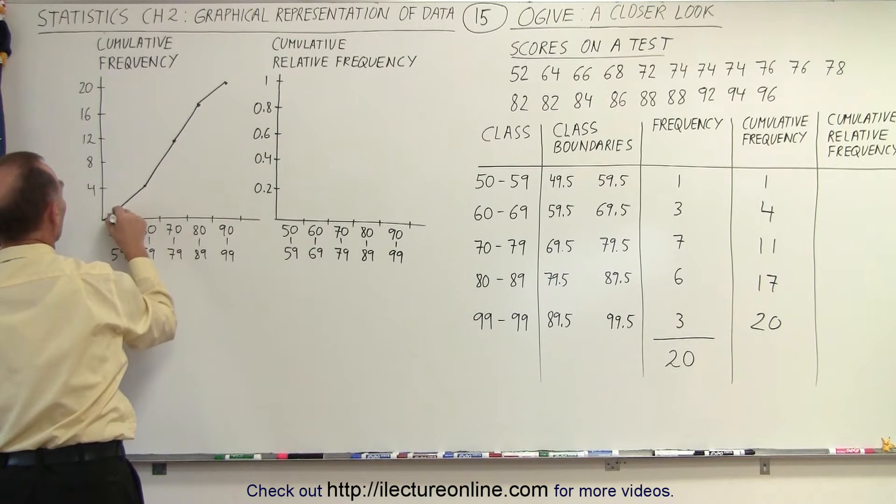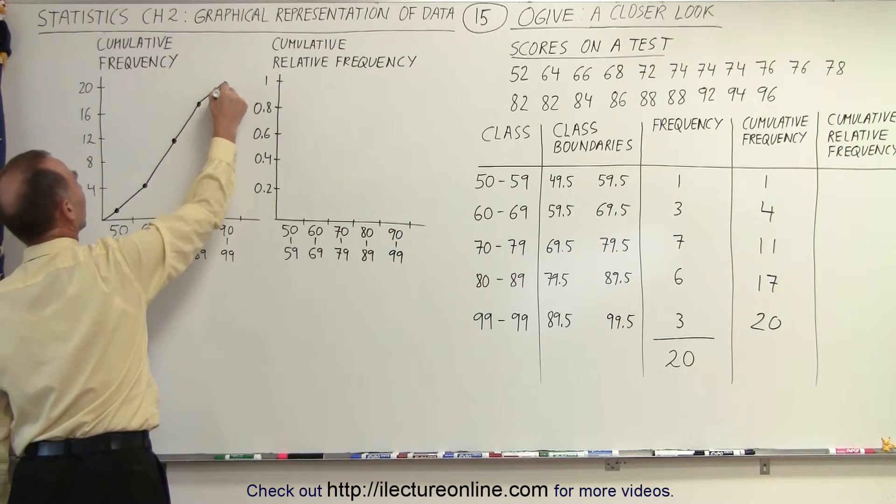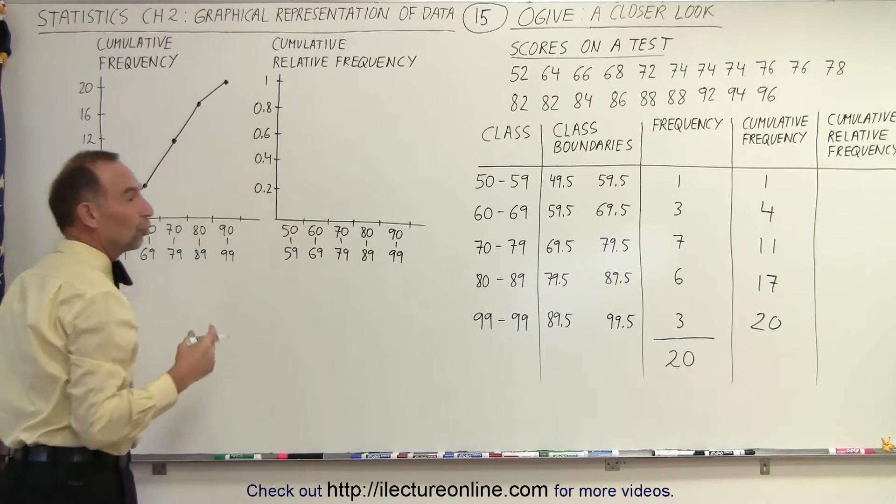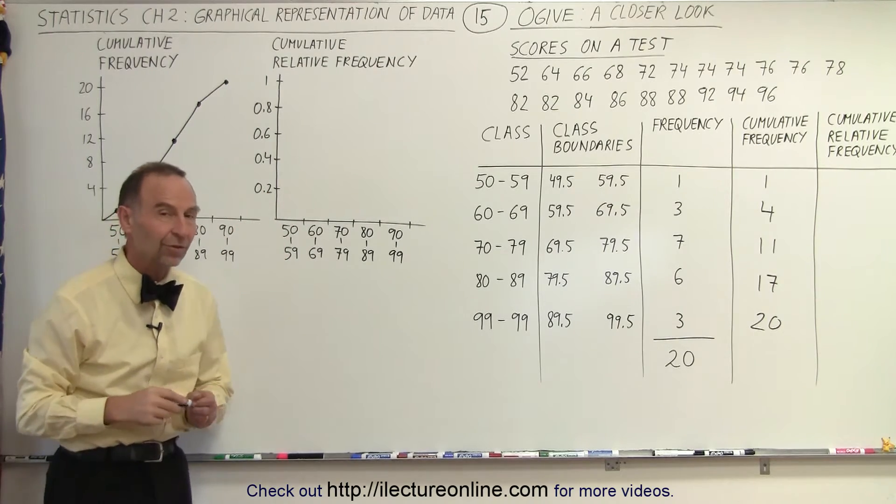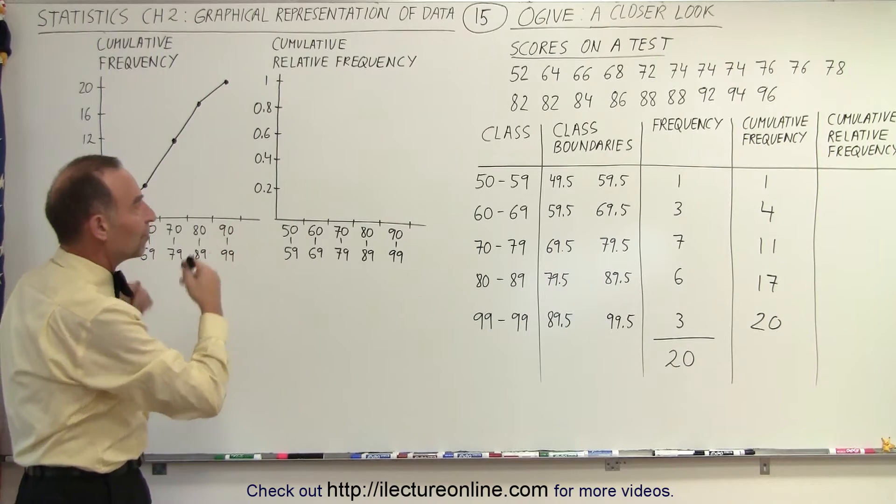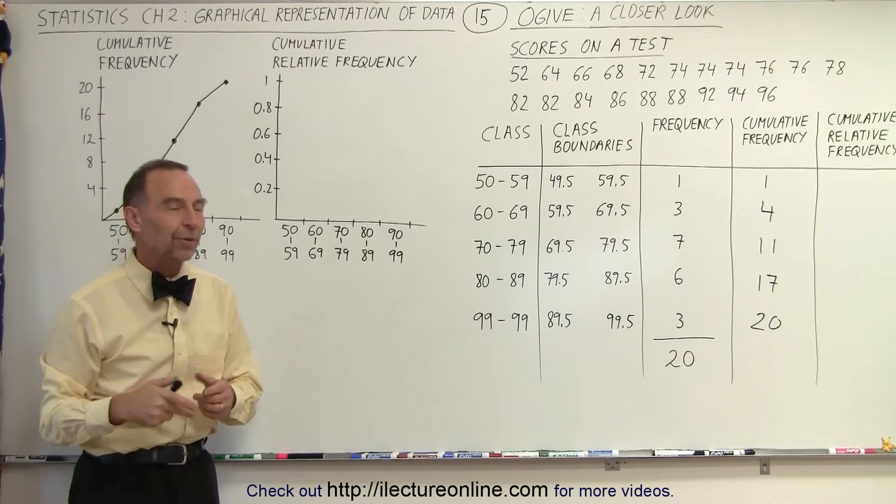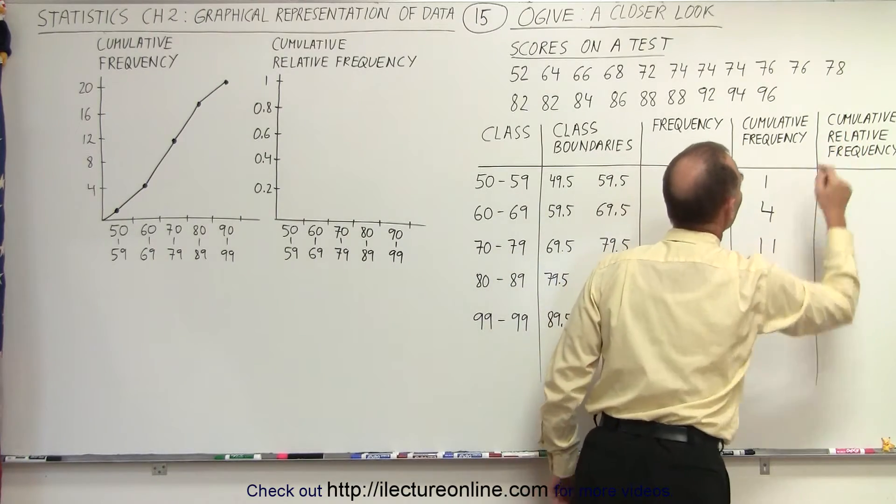So of course, we start at zero, we go to the first dot, second, third, fourth, and the fifth dot, each showing an increasing frequency number as we add all the frequencies together. But then the second graph, you'll see exactly the same shape, but the data will be represented differently. We'll represent it as the cumulative relative frequency.